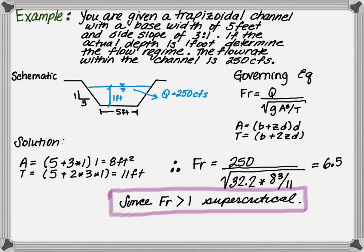In this example, if the Froude number was less than 1, we would define this as a subcritical channel.